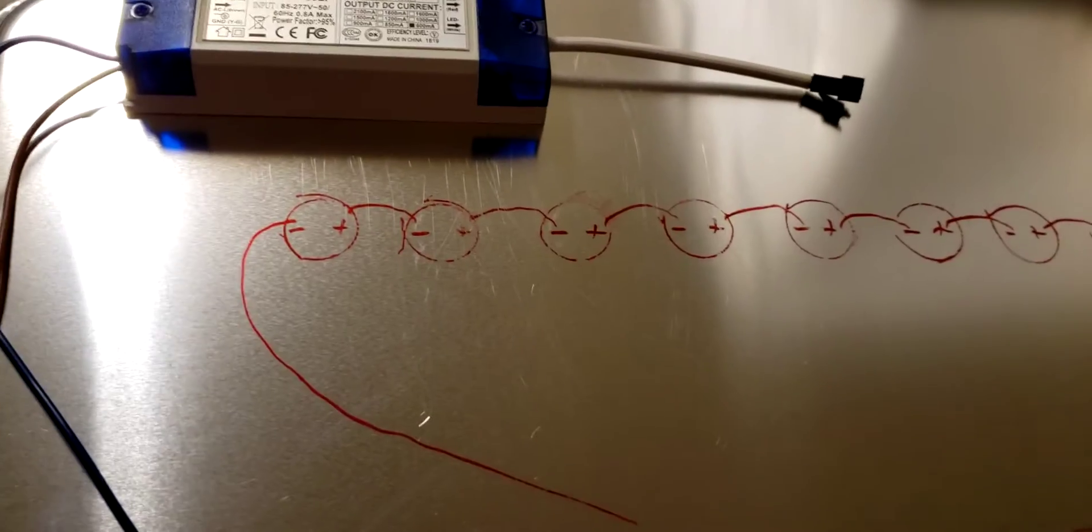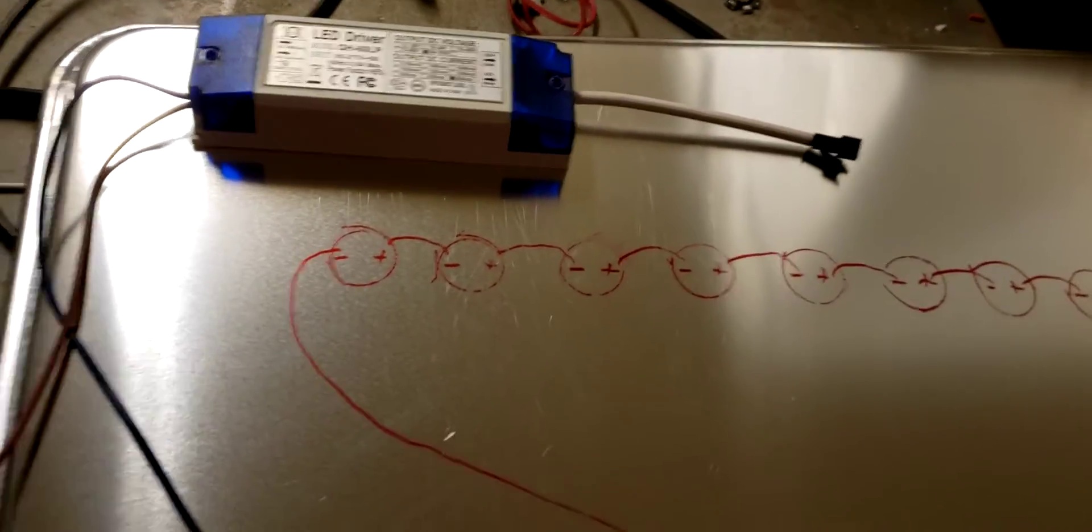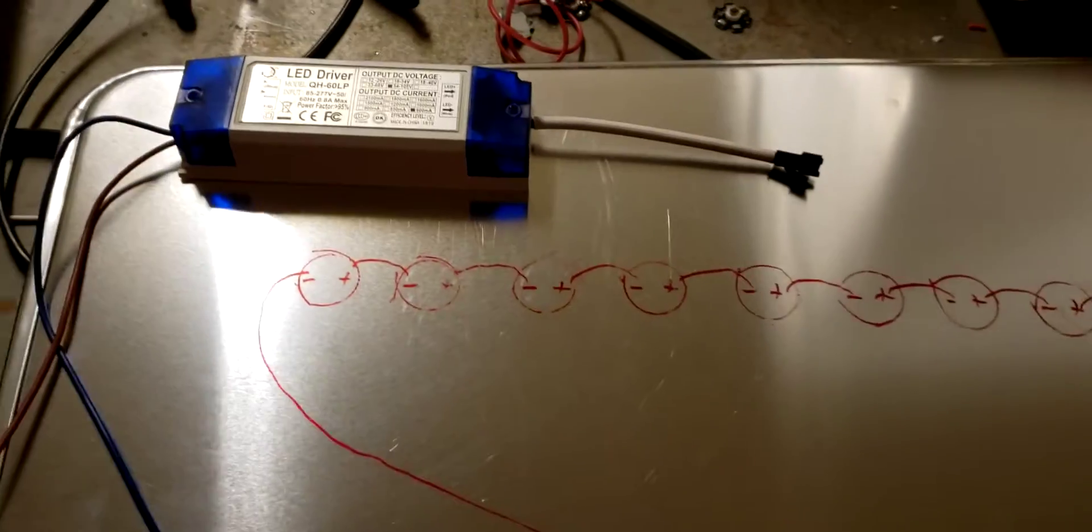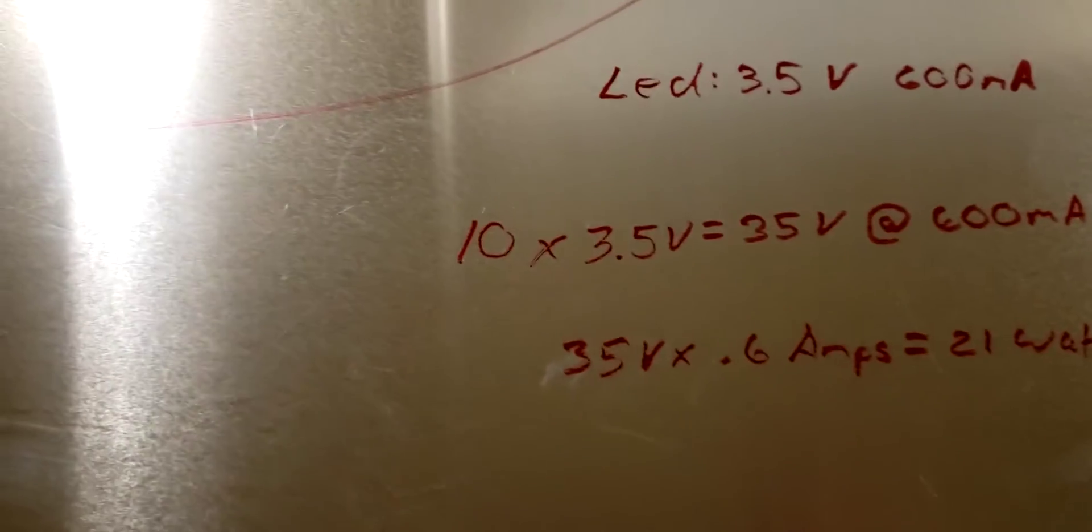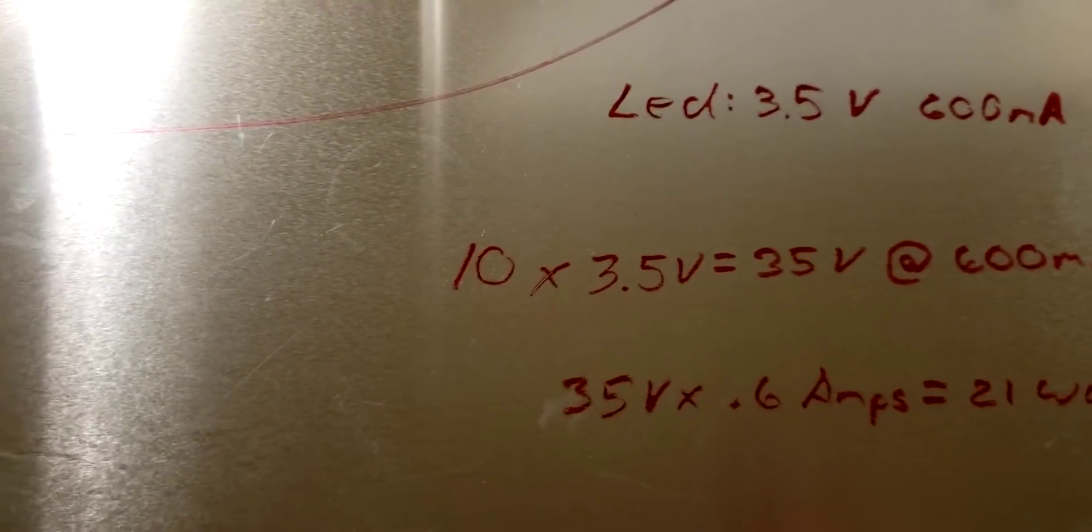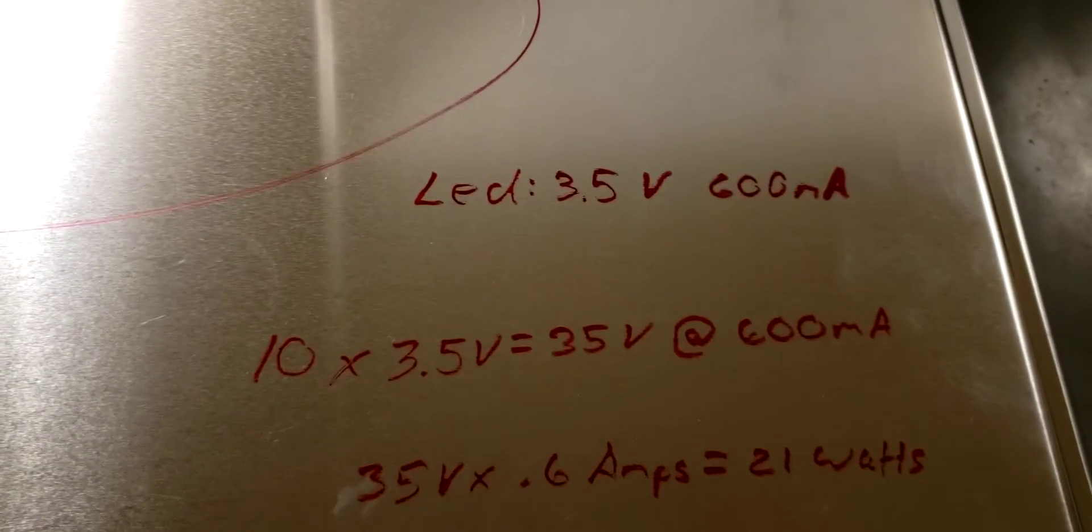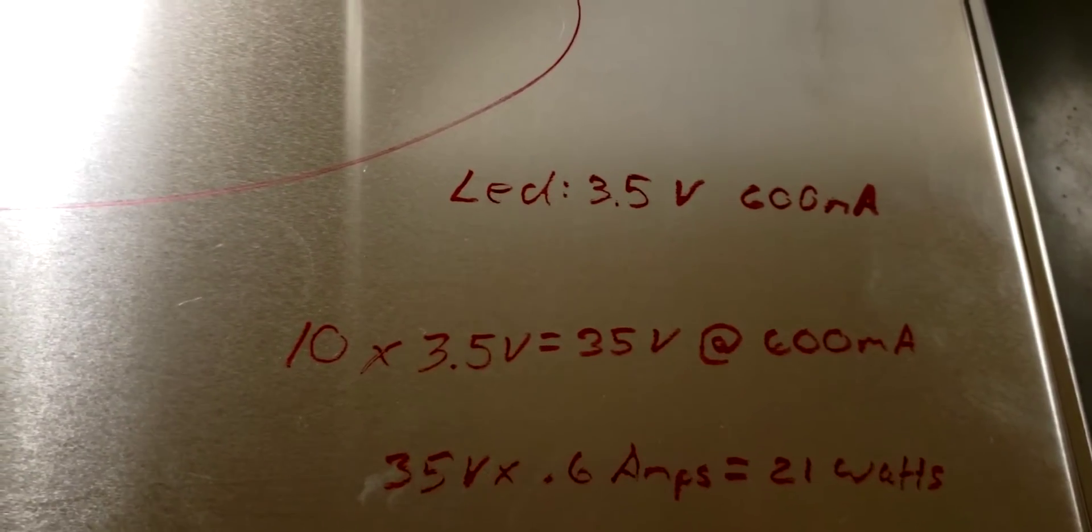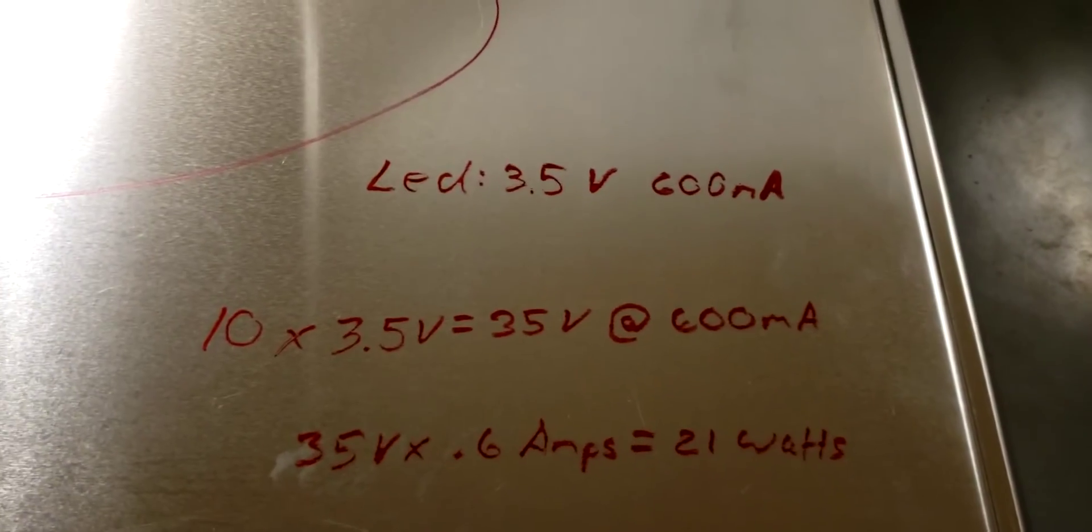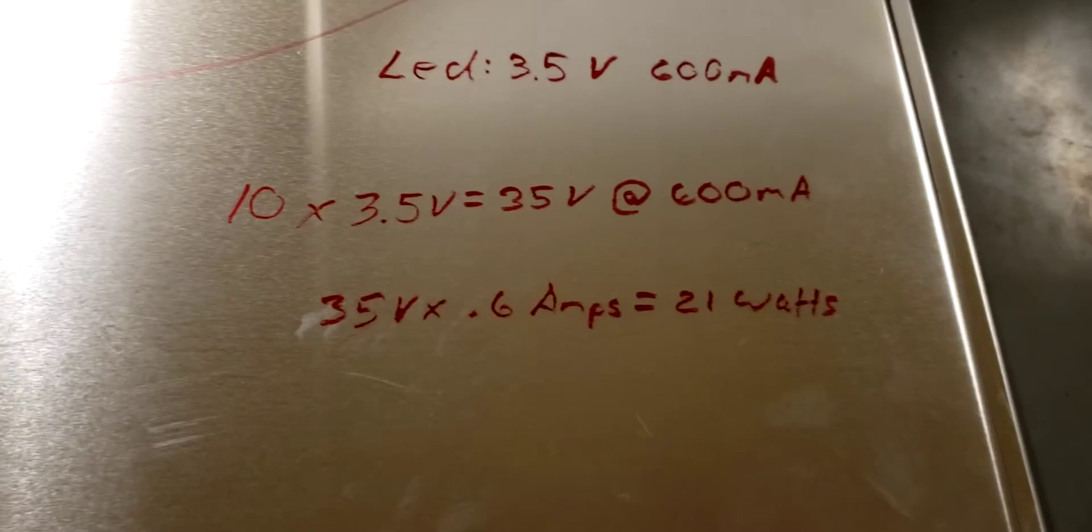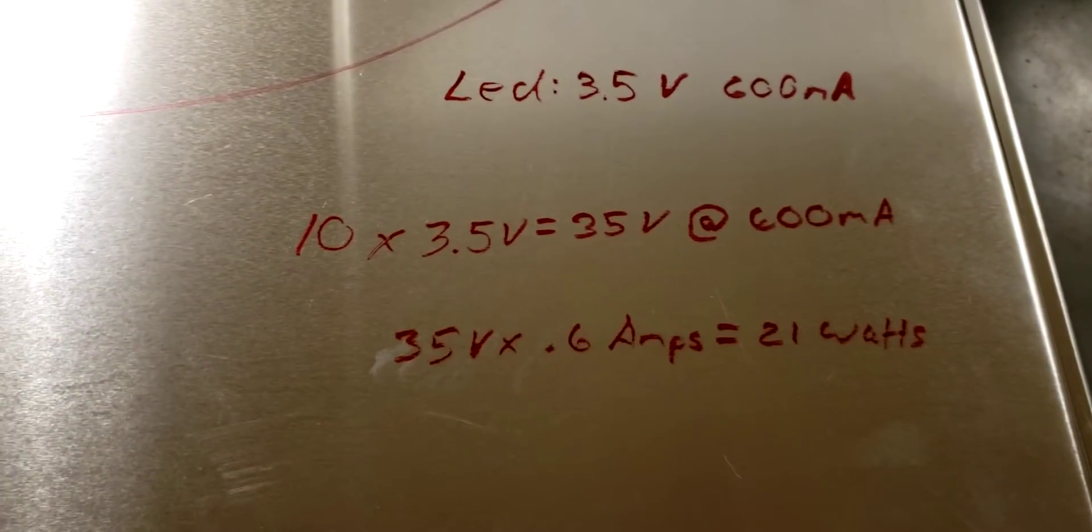If you have a circuit of 10 LEDs and let's say each LED pulls 3.5 volts at 600 milliamps, that's what I use. That means we have 10 LEDs in a circuit times 3.5 volts is 35 volts. So you need a driver that puts out at least 35 volts to drive these LEDs at 600 milliamps. And if you want the wattage you do 35 volts times 0.6 amps, which is 600 milliamps.